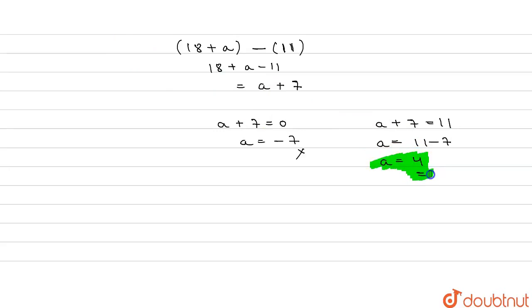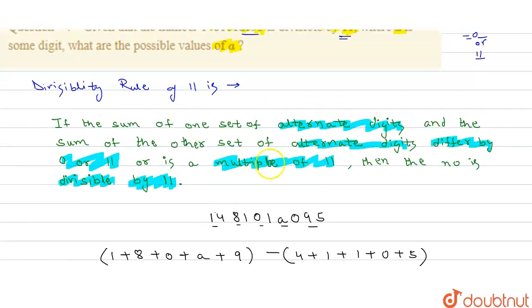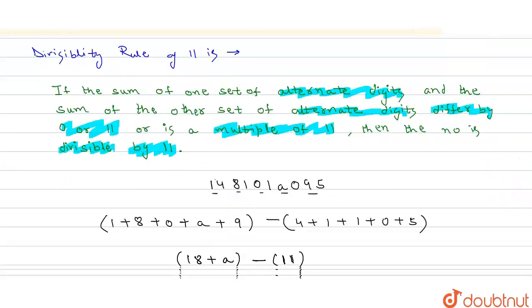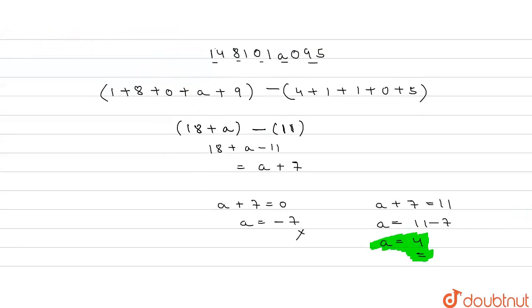So, this is the required value of A. A is equal to 4, and with this value the number becomes divisible by 11.